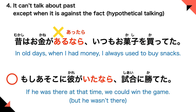But you can say: 'Moshi asoko ni kare ga ita nara, shiai ni kateta.' If he was there at that time, we could have won the game — but he wasn't there actually. So this is against the fact. When talking about a past fact, you can't use nara; you have to use tara. But if it is against the fact, you can use nara for past tense.